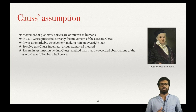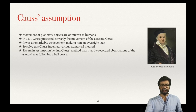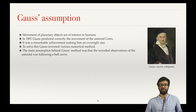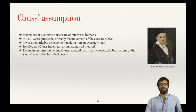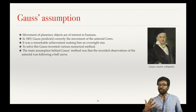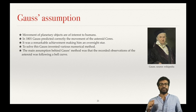For this prediction, many observations will have small errors, because it is ultimately human — people make errors, and machines that record make errors. Many of the observations of the asteroid's movement can be assumed to have slight errors. What Gauss assumed was that the recorded observations were following a bell curve.